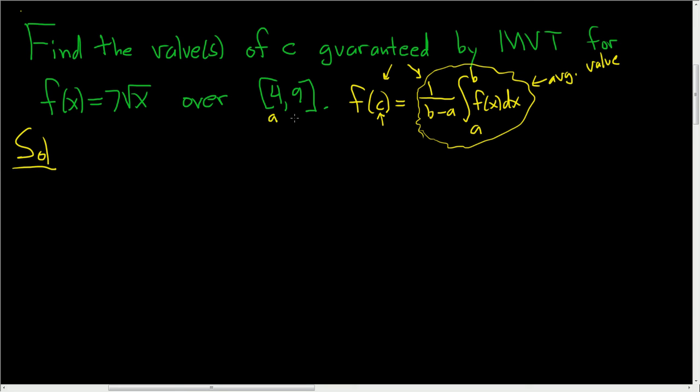So in this case A is 4 and B is 9. Let's go ahead and work this out carefully. So we have 1 divided by 9 minus 4. So that's B minus A. And we have the definite integral from A to B of f of X. So 7. And let's write it as X to the 1 half because we do have to integrate it at some point.